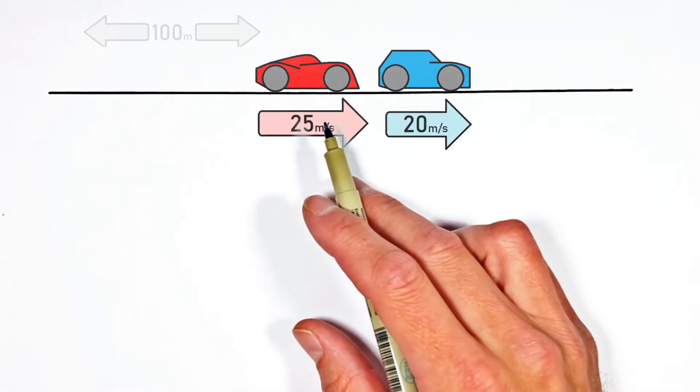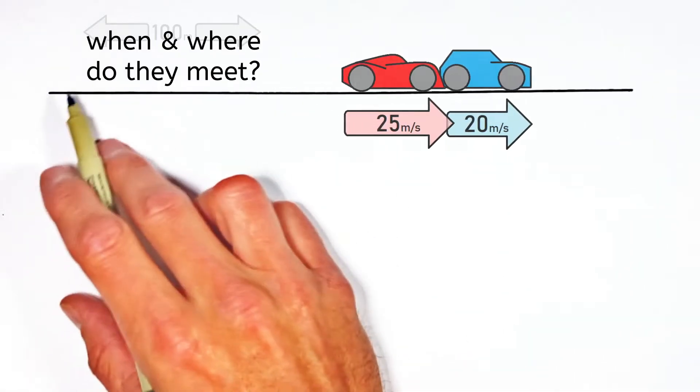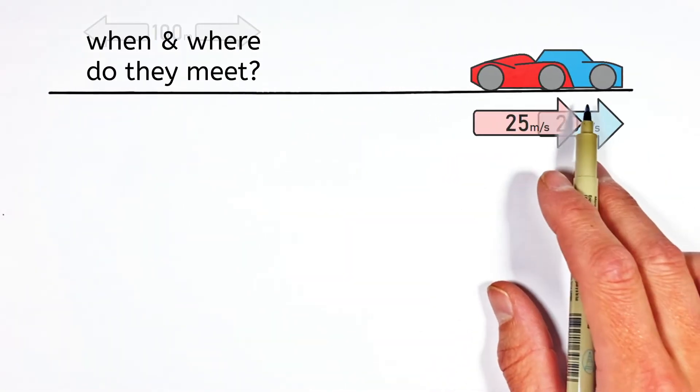So what we're going to solve for today is both when and where this faster car is going to catch the slower car somewhere over here.